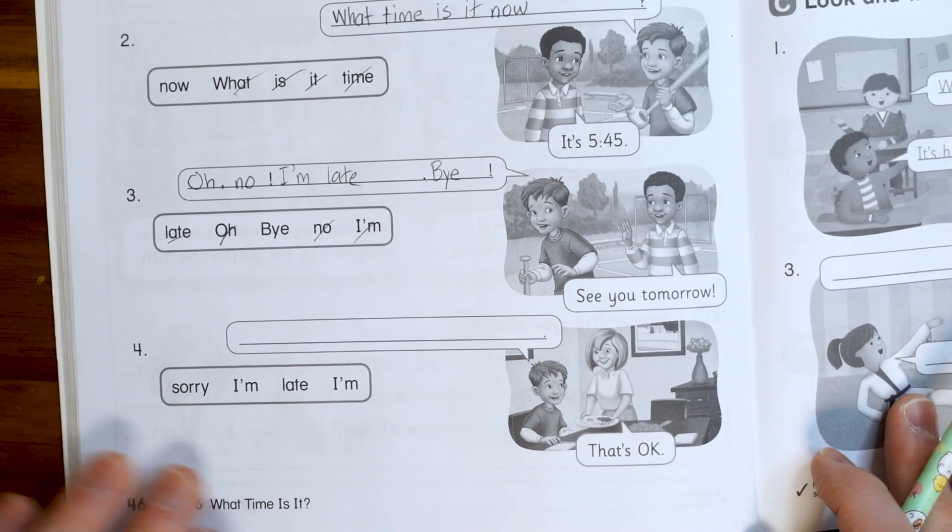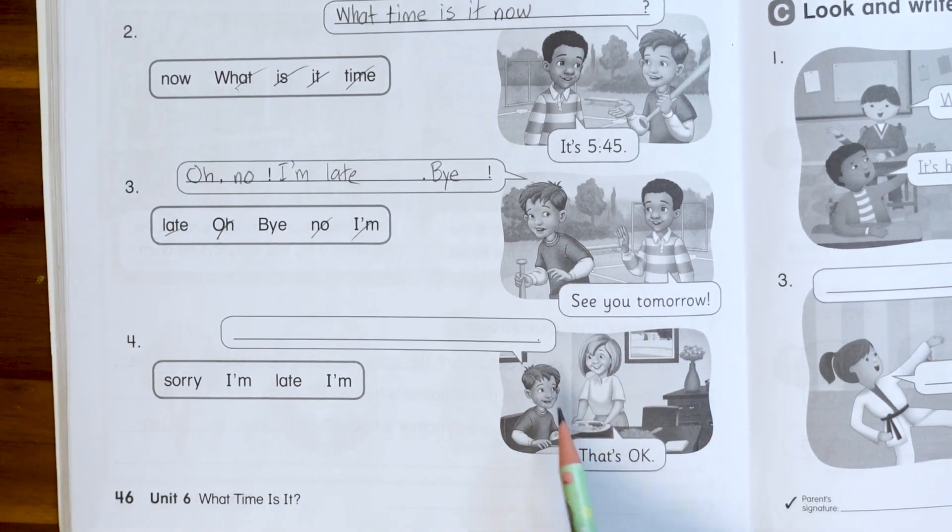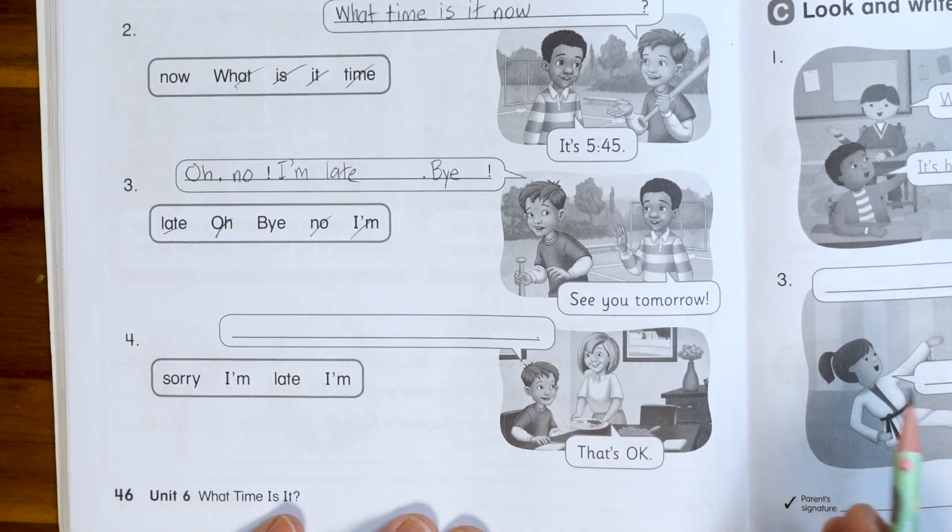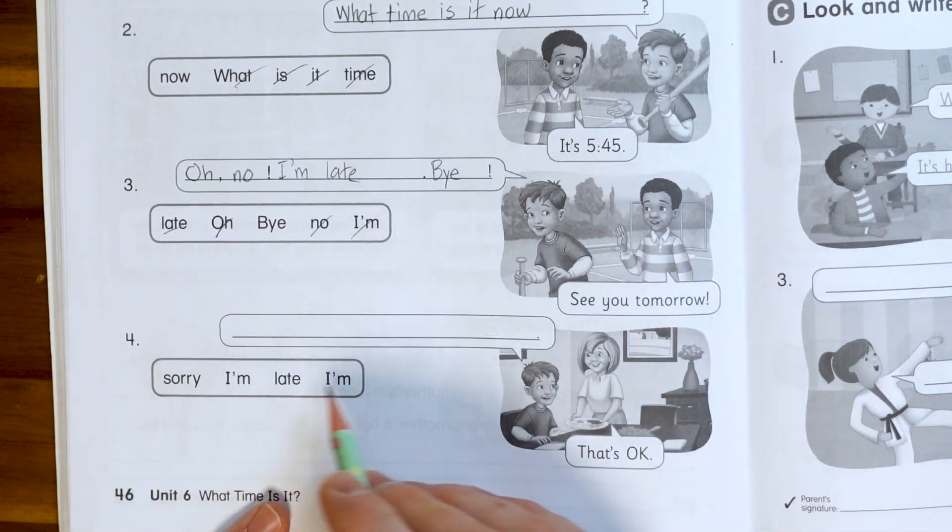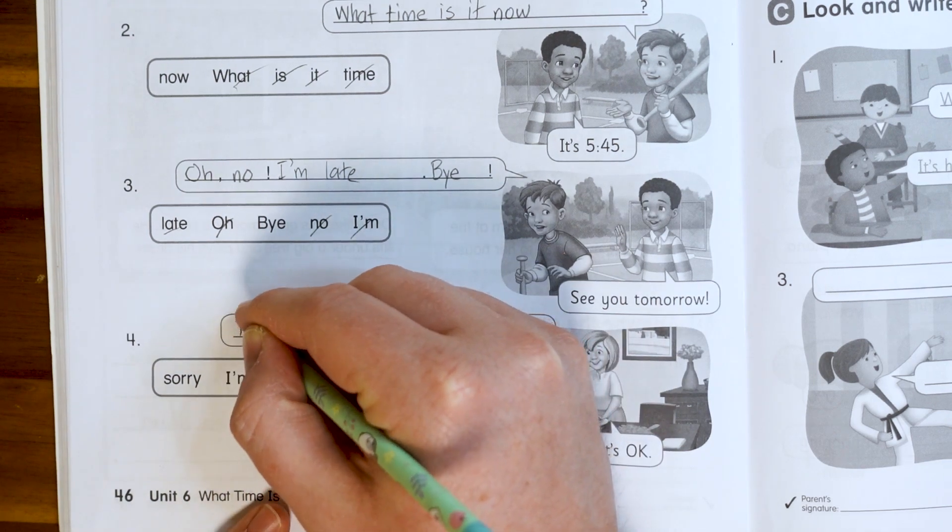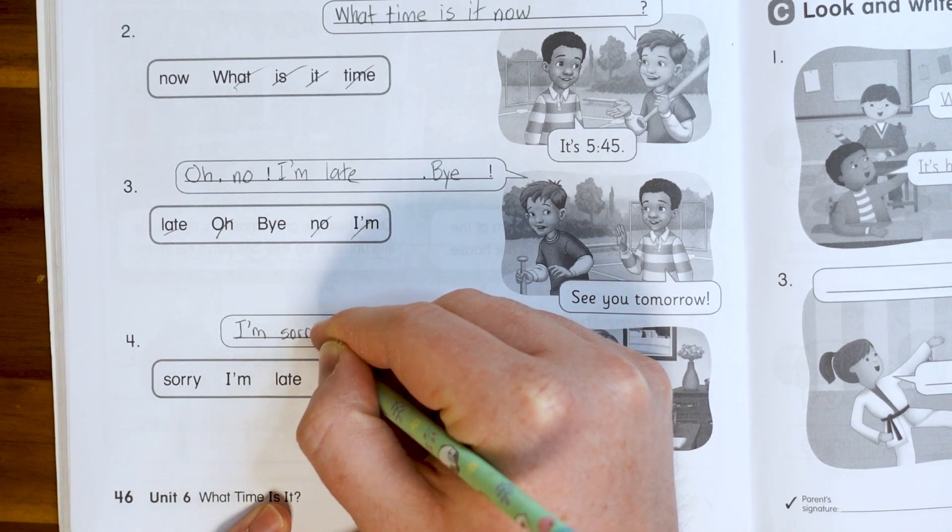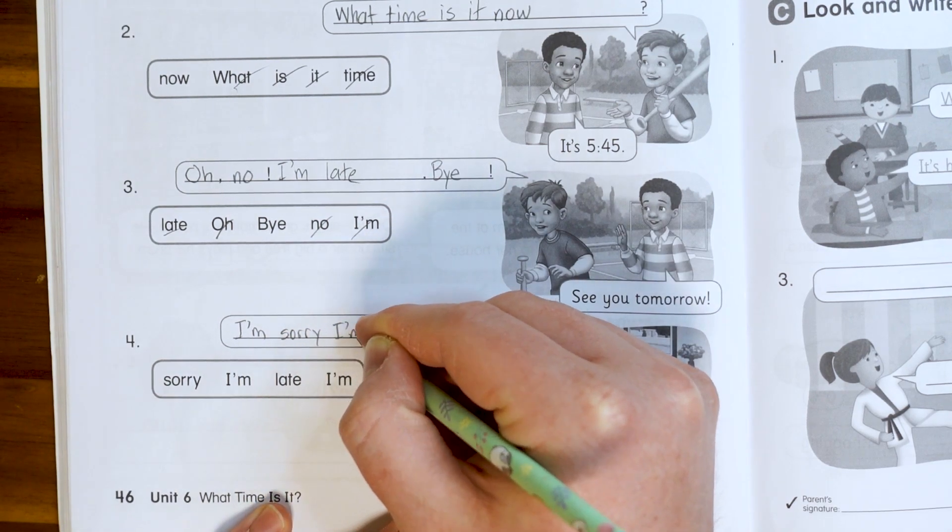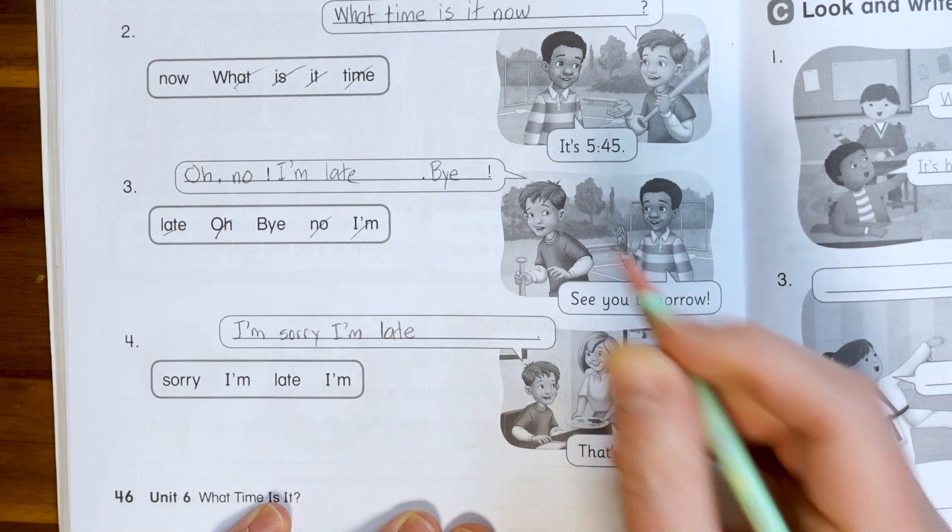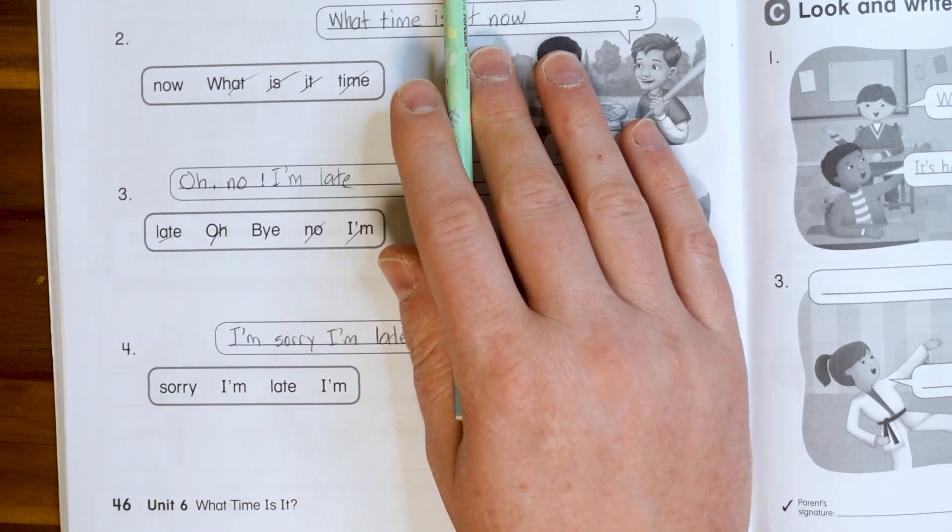Push this up a little bit. There's the last one. Okay. And the last one, Scott makes it home and he says sorry to his mom. So he's going to say one of these ones first. I'm sorry. I'm late. I'm sorry I'm late. That's okay. And part A is done.